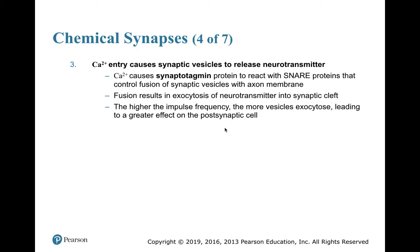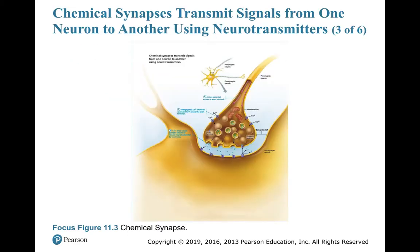Calcium acts on synaptotagmin proteins that react with SNARE proteins, fusing the synaptic vesicle with the axon membrane. That fusion results in exocytosis of the neurotransmitter. The higher the impulse frequency, the more vesicles undergo exocytosis, producing a greater concentration of neurotransmitter — which would be acetylcholine if this were a muscle cell — released into the synaptic cleft.